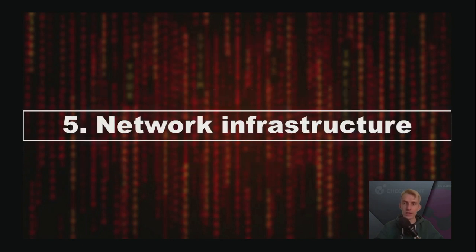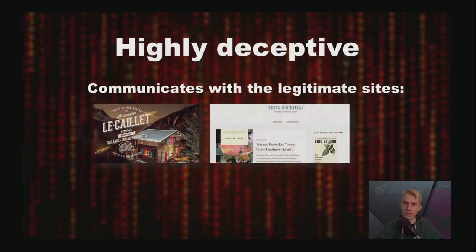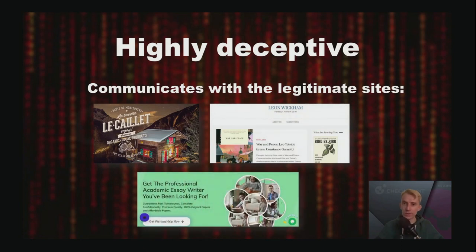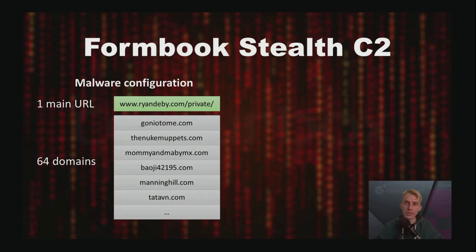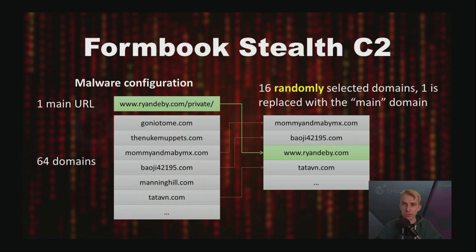Malicious servers stay hidden because the malware disguises its communication by directing most of its traffic to more than 100,000 legitimate servers, making it seem impossible to distinguish a malicious server from a legitimate one. When you run Formbook, it decrypts its configuration containing a list of 64 domain names and one URL. The malware randomly selects 16 of the 64 domains. One of them is replaced with the main domain, and the selected 16 domains are used for C2 communication.